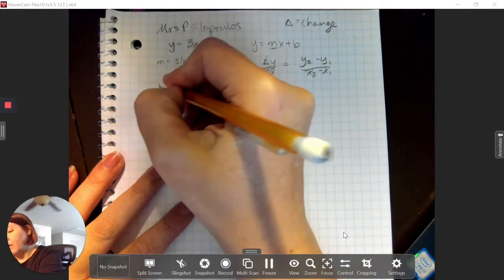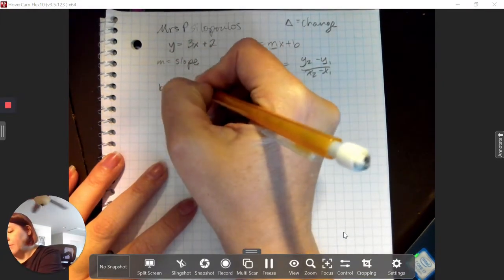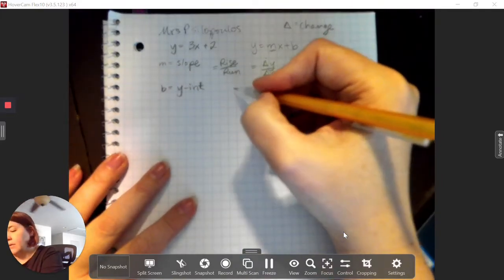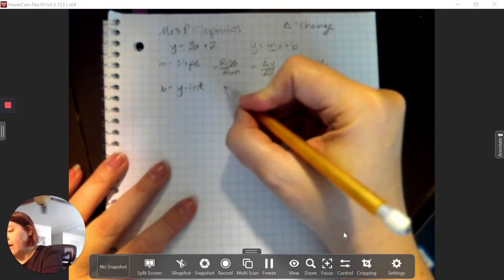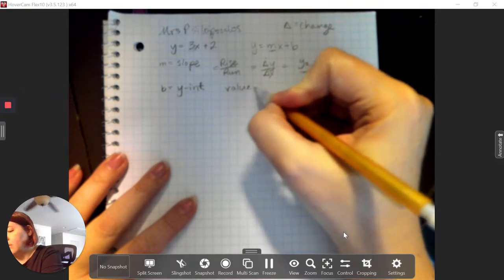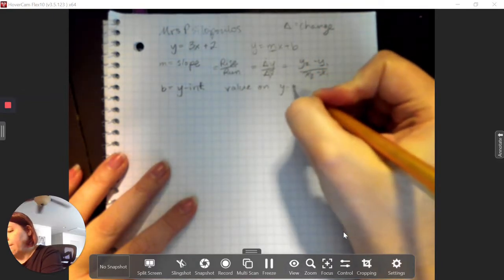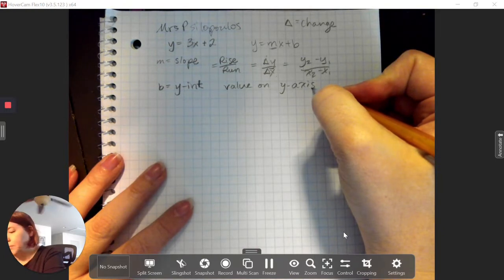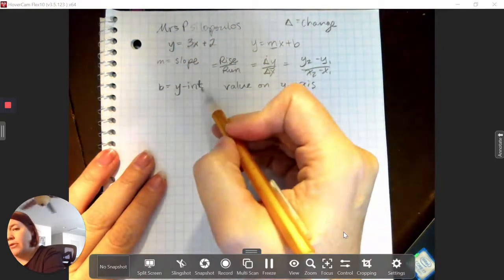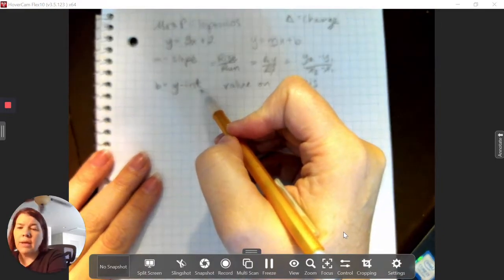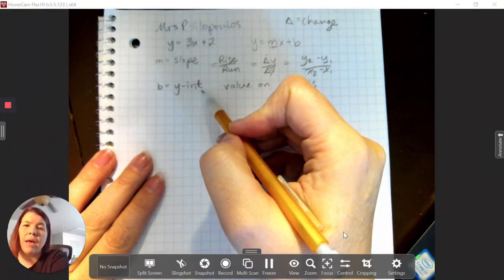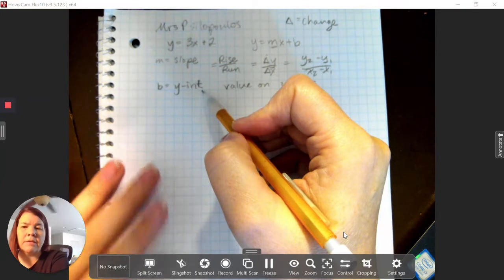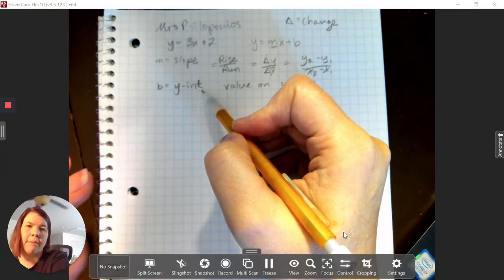You might remember this formula, which I absolutely hate: y2 minus y1 over x2 minus x1. I think this formula is pretty obnoxious. I like this better. What is the difference between the y-coordinates? What's the difference between the x-coordinates? I find it to be more helpful. Your rise over run is what we're going to use mostly as we graph.